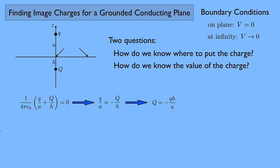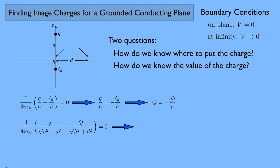Let's look at the potential at a point a distance d from the z-axis somewhere in the xy plane. The potential there is 1 over 4π epsilon-naught, with two contributions: from the little q at distance √(a² + d²), using the Pythagorean theorem, plus Q over √(h² + d²). On the plane, V is zero, so we set that equal to zero and get another relationship between Q and h. Now we have two equations to solve for Q and h.